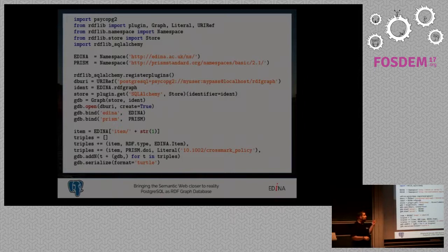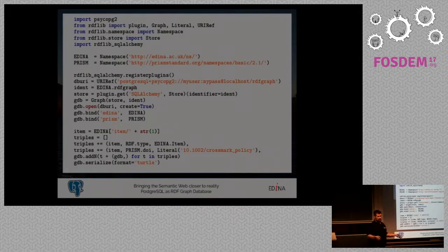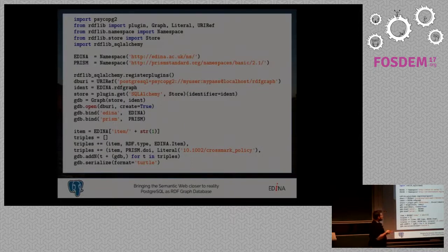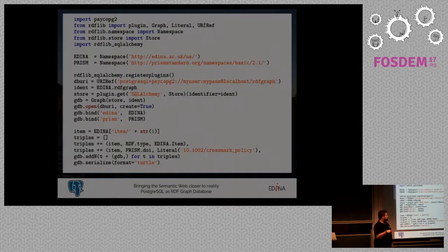We create two namespace objects — one is our own EDINA namespace, which is private, and one is PRISM, a fairly standard namespace giving bibliographic types of metadata you can encode in RDF. We register the plugins, give it a database URI specifying Postgres, psycopg2, user, password, localhost, and a database called rdf_graph. We also give the graph a name so we can find it in the database — the context — and we're giving it the EDINA namespace, creating a graph called EDINA/rdf_graph.